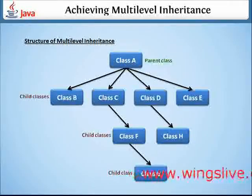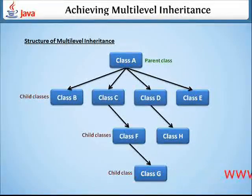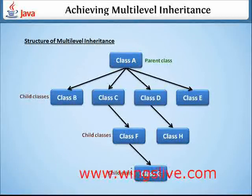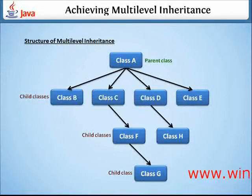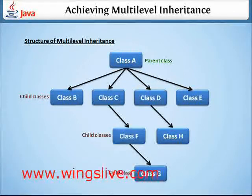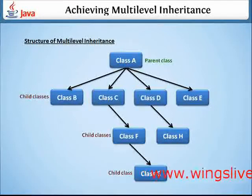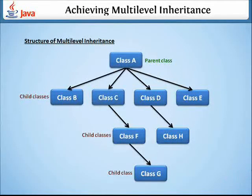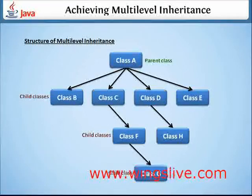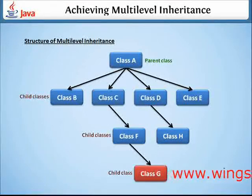Here is the pictorial image of multi-level inheritance. Parent class A inherits its properties to child classes B, C, D, and E. Then class F inherits the property of class C, which automatically inherits the property of parent class A. Similarly, class G inherits the property of class A and C through class F. Hence, class G indirectly achieves multi-level inheritance.